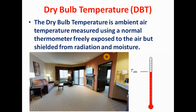First of all, we will see what is dry bulb temperature. Dry bulb temperature is a very simple concept. Suppose this is a simple normal thermometer. By using this thermometer, we are measuring the temperature of any area or surrounding by protecting the bulb of this thermometer from moisture and radiation — then this temperature is known as dry bulb temperature. If we are measuring the temperature of a room that does not contain any moisture or radiation using this normal thermometer, we call this temperature the dry bulb temperature.